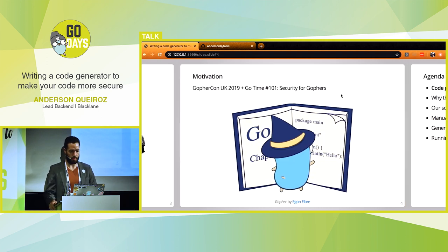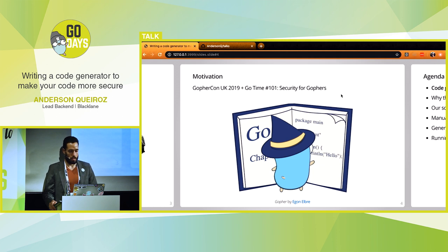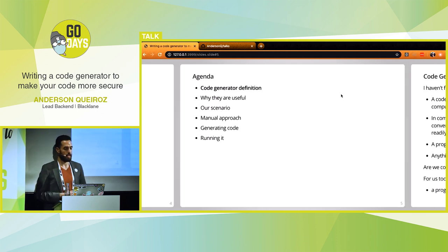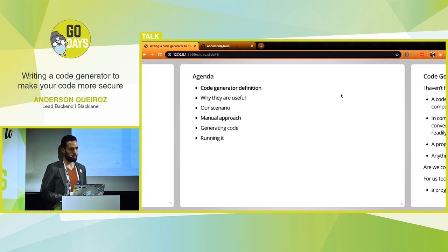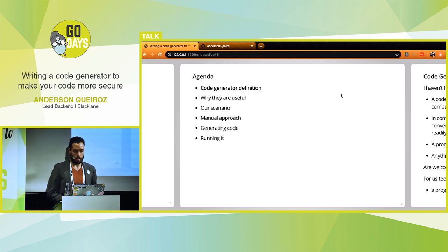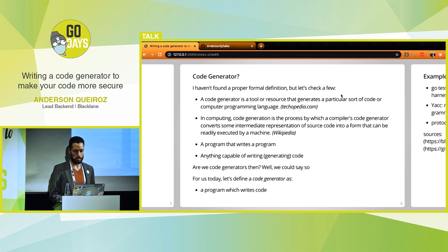A bit of motivation for this talk: first things first, always keep learning new stuff in Go and challenge myself. At GopherCon 2019 I was introduced to code generation in Go, and also from Go Time about security — some nice ideas. Put everything in a blender and we are here today. Our agenda: the definition of code generation, why they are useful, a scenario, a manual approach, how to generate code, and how to integrate it in our build pipeline.